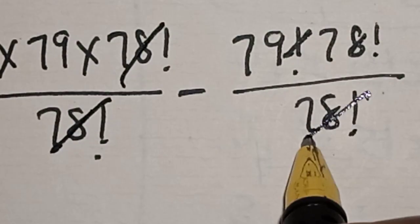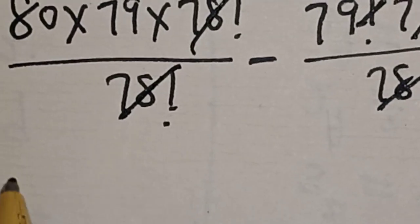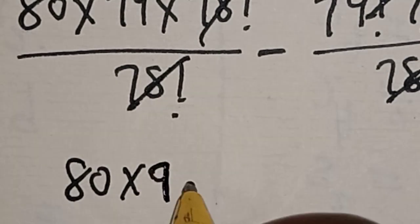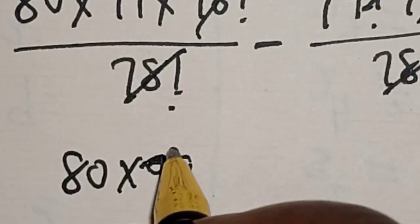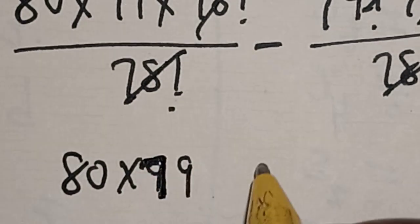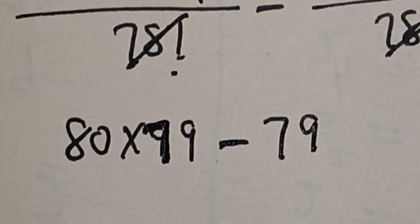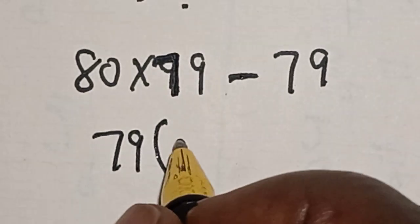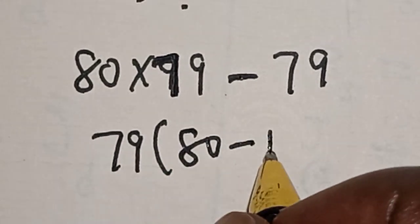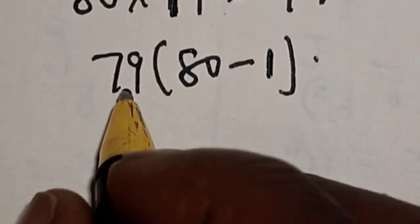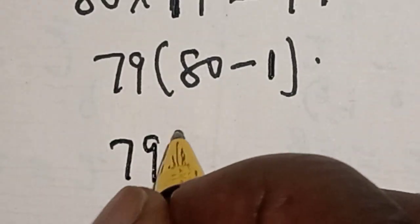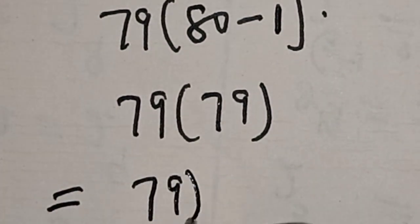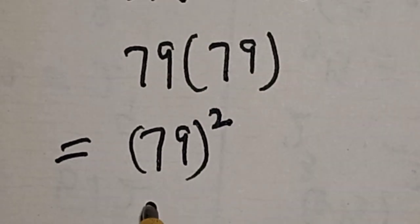The 78 factorial terms cancel. We are left with 80 multiplied by 79 minus 79, which is 79 multiplied by (80 minus 1), giving us 79 multiplied by 79. This equals 79 squared.